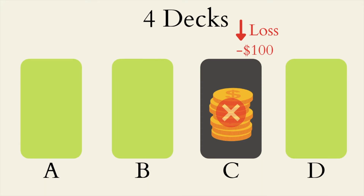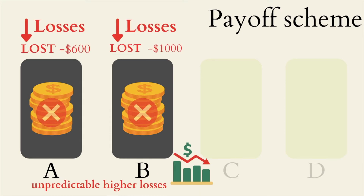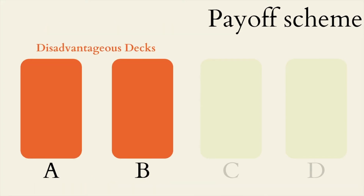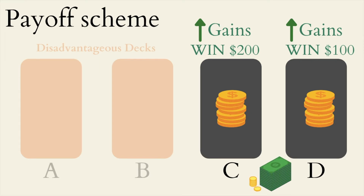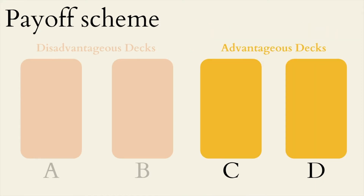The difference between the four decks results in a certain type of payoff scheme. Two decks out of the four — decks A and B — are associated with high immediate and constant rewards, but coupled with even higher unpredictable occasional losses, resulting in negative long-term outcomes. As a result, decks A and B are called bad or disadvantageous decks. On the other hand, the other two decks — decks C and D — are associated with lower immediate constant rewards but even lower unpredictable occasional losses, and thus result in positive long-term outcomes. As a result, decks C and D are called good or advantageous decks in the IGT.